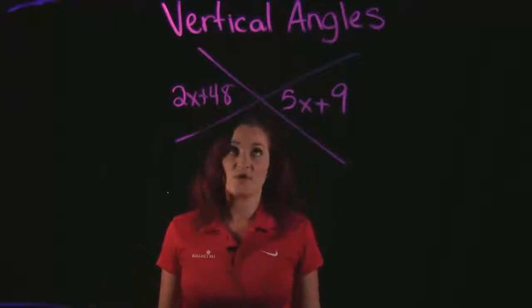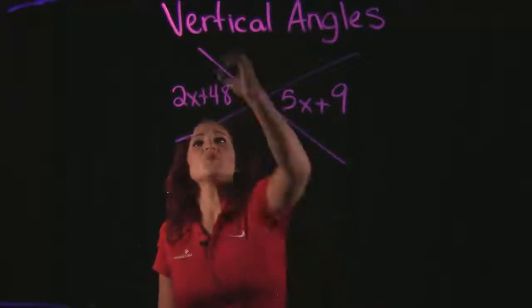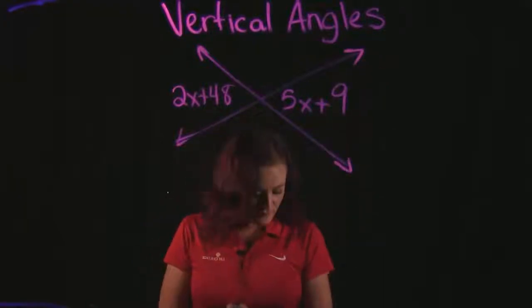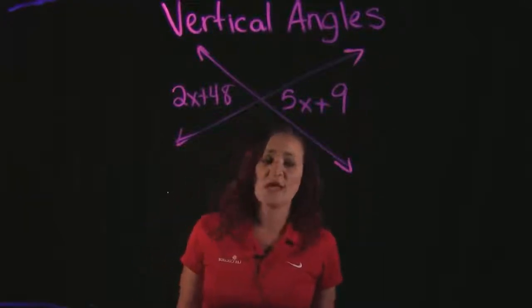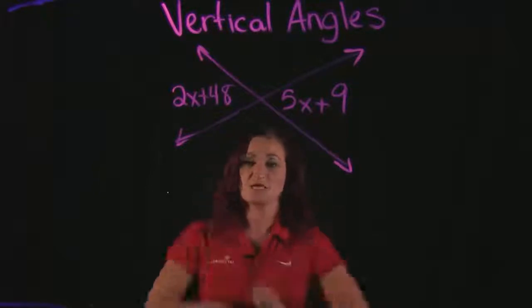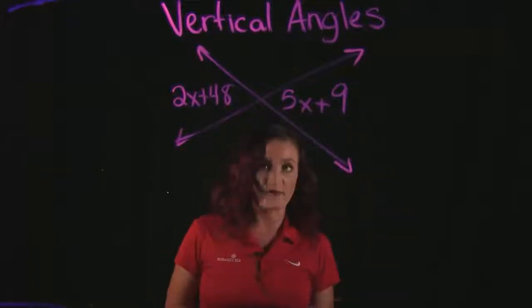So here we have a vertical angle example, and the way that we know that is vertical angles will essentially happen when we have two lines that intersect. Anytime we have two lines that cross, they create a space of four different angles.